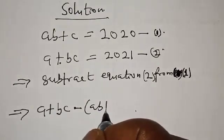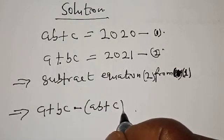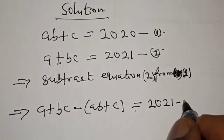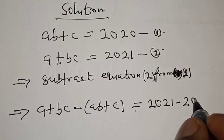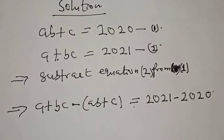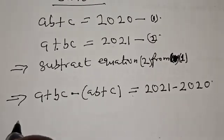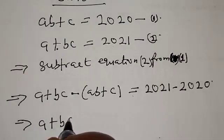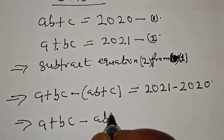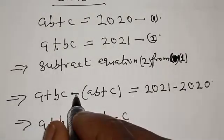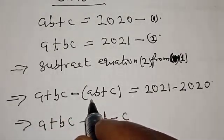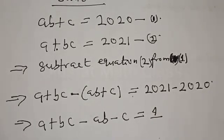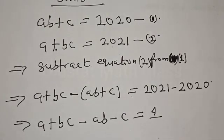Subtracting equation 1 from equation 2 gives us A plus BC minus AB minus C equal to 2021 minus 2020, which equals 1. Opening the bracket with the minus sign, we have A plus BC minus AB minus C equal to 1.